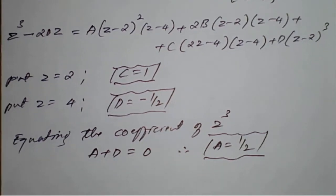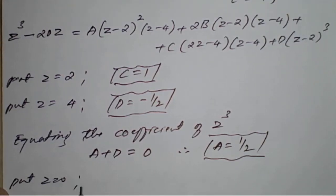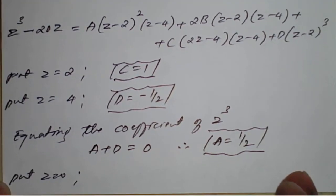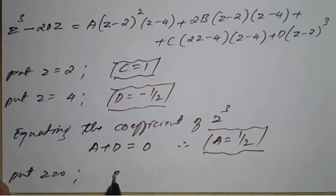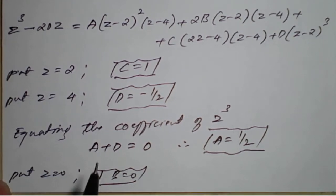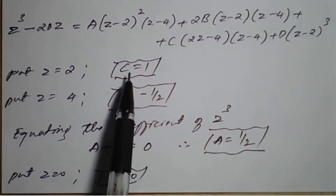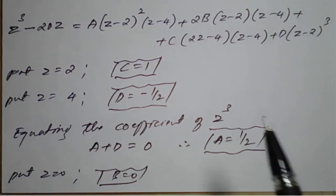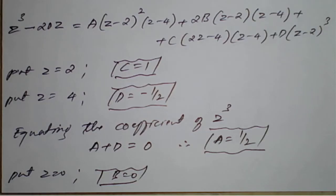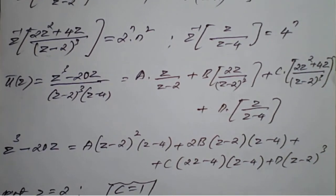Putting Z=0 into the expression, and using the known values of A, D, and C, we get B=0. So we now have all values: A=1/2, B=0, C=1, D=-1/2. Substituting these into the partial fraction expression gives a standard form to which we can easily apply the inverse Z-transform.